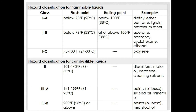For combustible liquids, the flash point is above 37.8°C. Class 2 covers 39–60°C — examples include diesel fuel, motor oil, kerosene, and cleaning solvents. Class 3A covers 61–93°C — examples include paint (oil-based) and mineral oils. Class 3B covers above 93°C — examples include certain oil-based paints and linseed oil. If combustible liquids are stored at elevated temperatures above their flash point, they can produce vapors and become flammable.